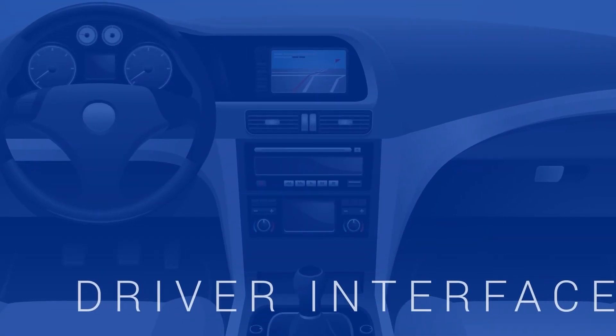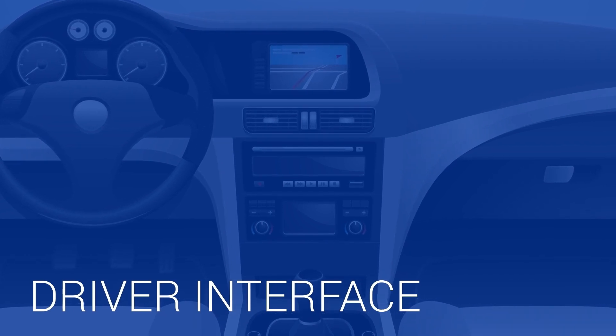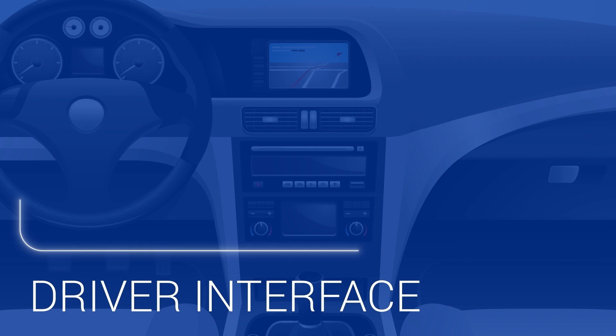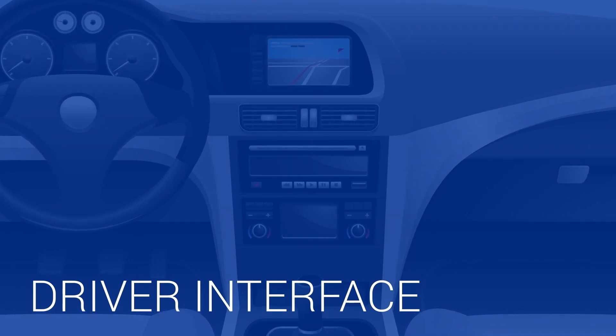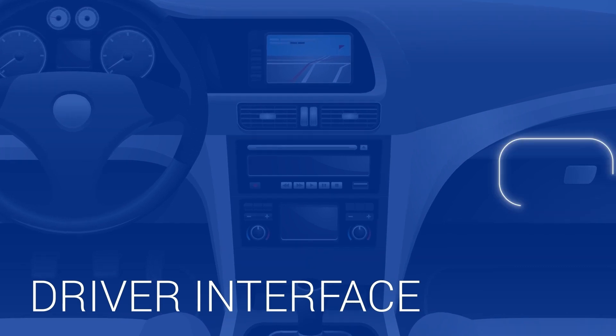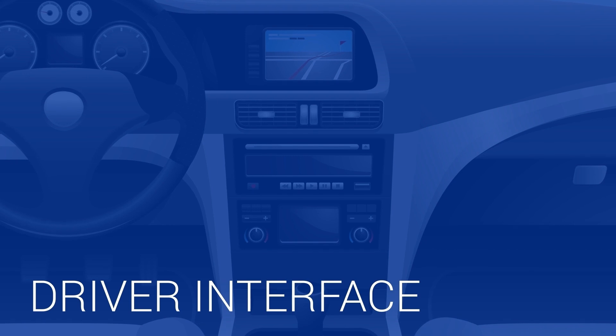The final layer is the interface for the driver and other passengers. This includes digital cockpit features such as dashboard and heads-up displays, voice control, and infotainment systems. Traditional vehicle controls such as dashboard switches, steering wheel buttons, and function stalks also operate at this level.